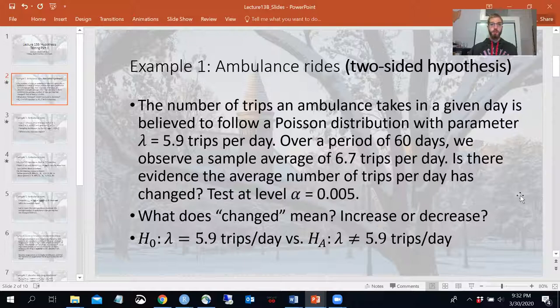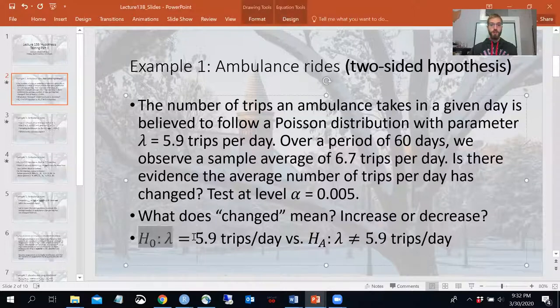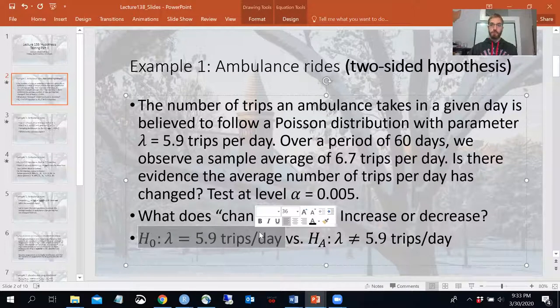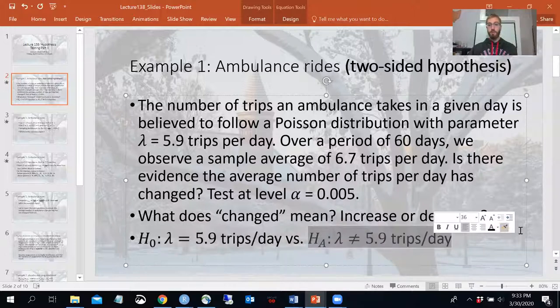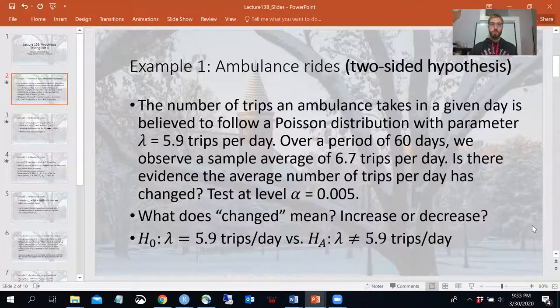So what does change mean? Increase or decrease? Well, it means either one, right? So when we write our hypotheses, the null is that lambda is equal to 5.9 trips per day. That's the status quo. That's what we've assumed from here on out. Versus the alternative that lambda is not equal to 5.9 trips per day. So this looks just slightly different than the problems we've done before in that we have a not equal to sign as opposed to greater than or less than sign. So the only thing that's going to change is our rejection region.